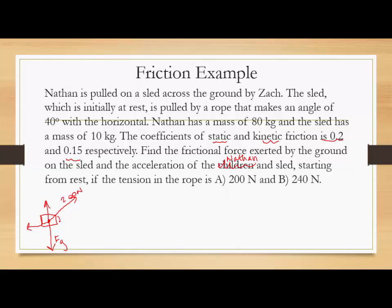They're telling us that the static and kinetic friction is 0.2 and 0.15 respectively. So we need to find the frictional force exerted by the ground and the acceleration of Nathan and the sled starting from rest. And we have two different tensions in our rope. So we're going to start with 200 first, and this is 40 degrees. So the first thing we need to determine is if our sled is even going to move, meaning if the applied force here is going to be large enough to overcome our static frictional force.